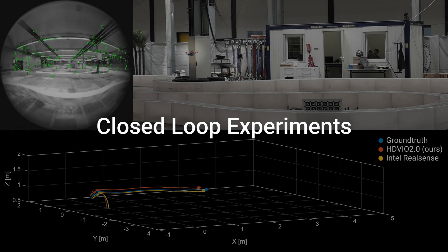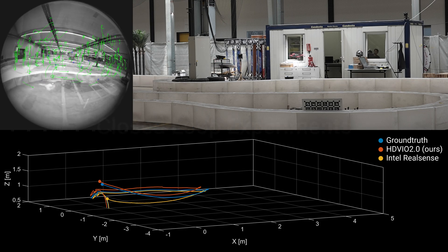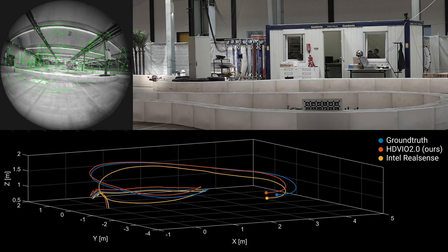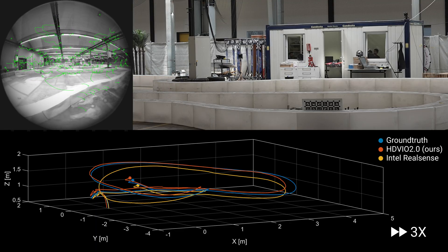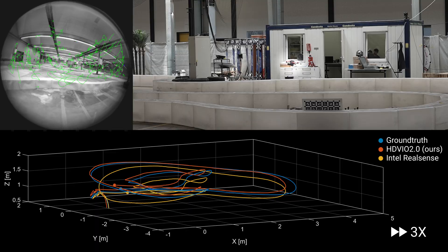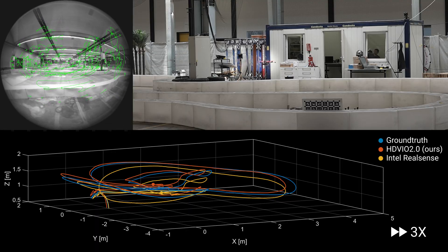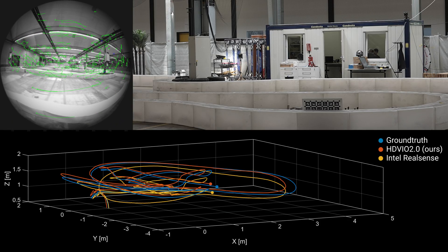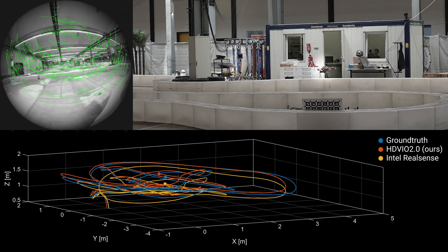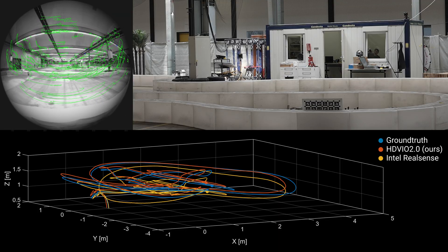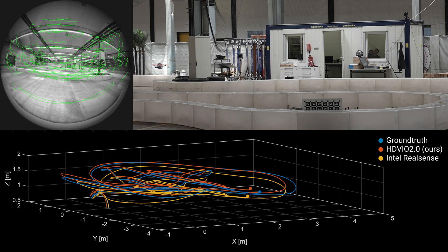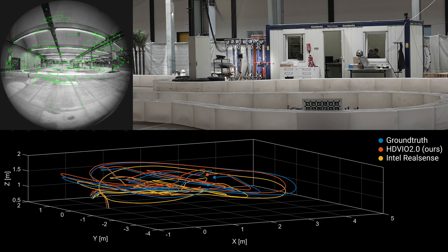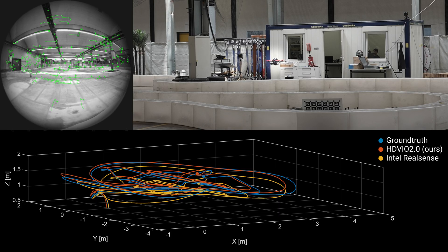Finally, we demonstrate that HDVIO2 runs efficiently onboard the quadrotor and provides real-time state estimates for closed-loop control. The goal of this experiment is to track a random trajectory using only our HDVIO2 state estimate for control. The plot at the bottom shows the ground truth position in blue, the Intel RealSense estimate in yellow, and ours in red. Notably, HDVIO2 outperforms the commercial stereo-based visual-inertial SLAM system of the Intel RealSense T265. Towards the end of the 120-second flight, the RealSense has drifted 50 cm, whereas our approach only drifts about 20 cm.